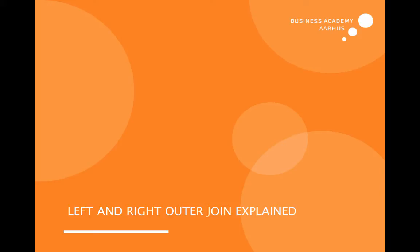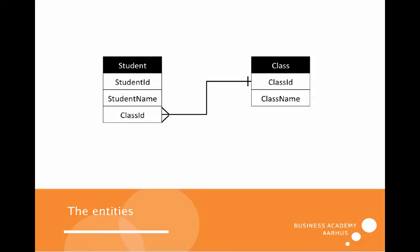Let's have a look at the outer join. The outer join consists of two types: left and right outer join. We have these entities — student and class. Student consists of an ID, a name, and a foreign key relation to the class entity, which has a primary key, class ID, and a class name.